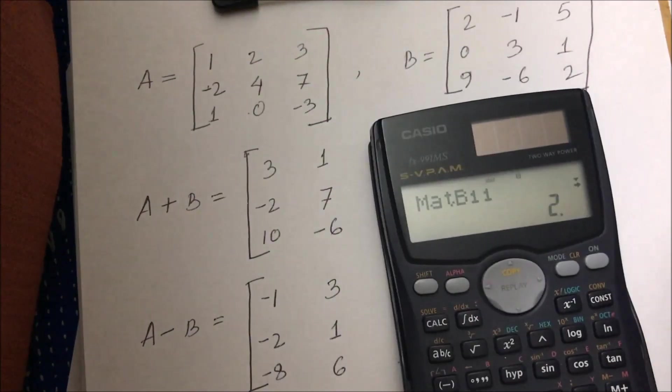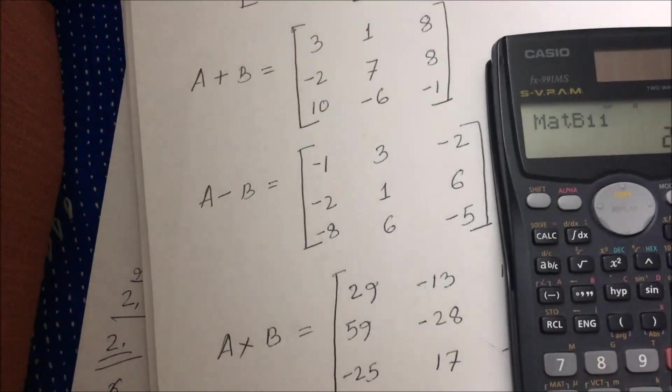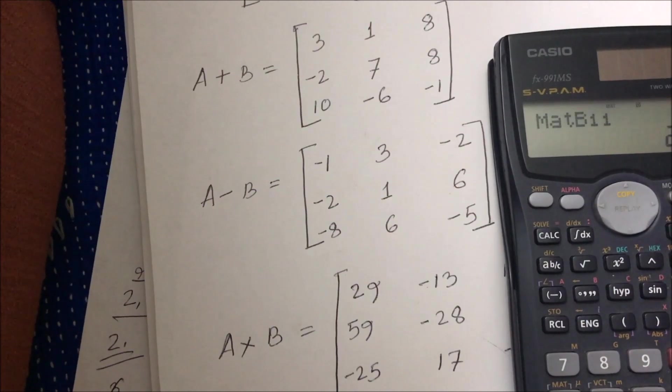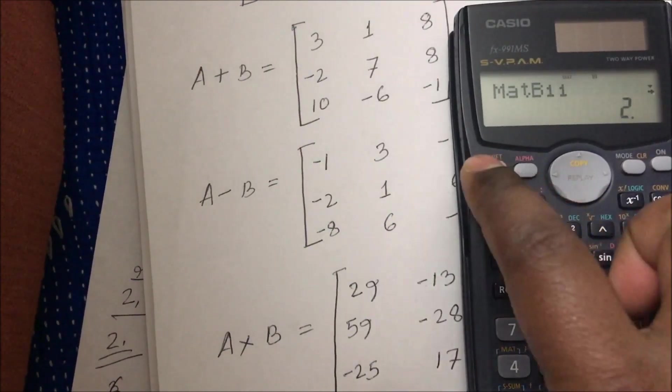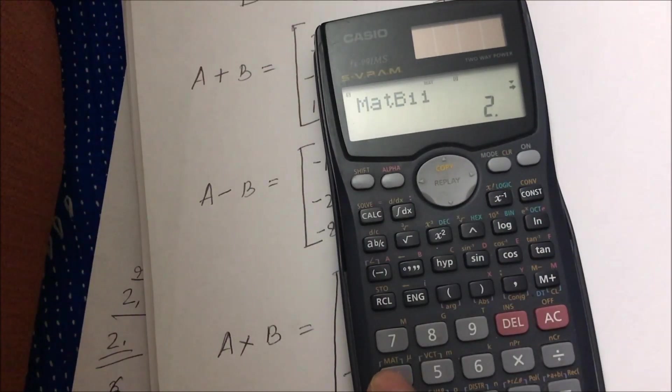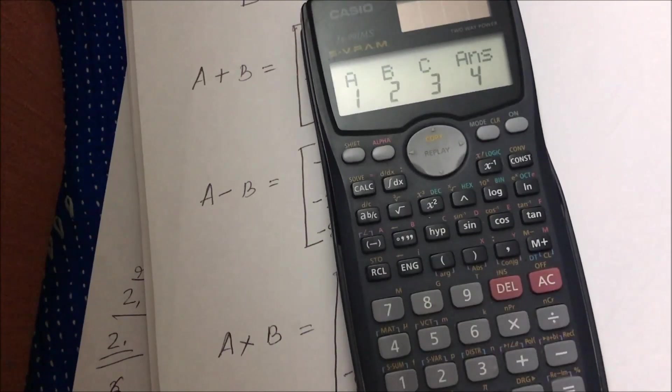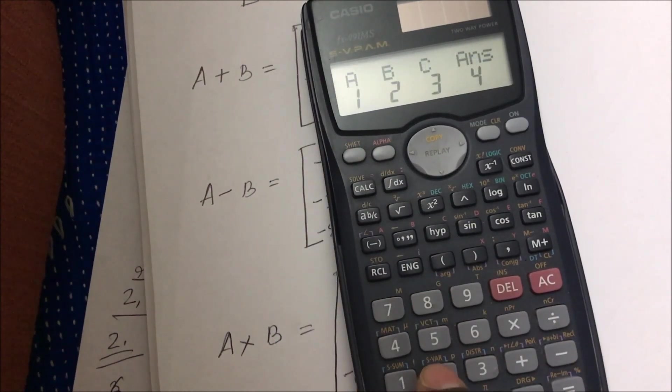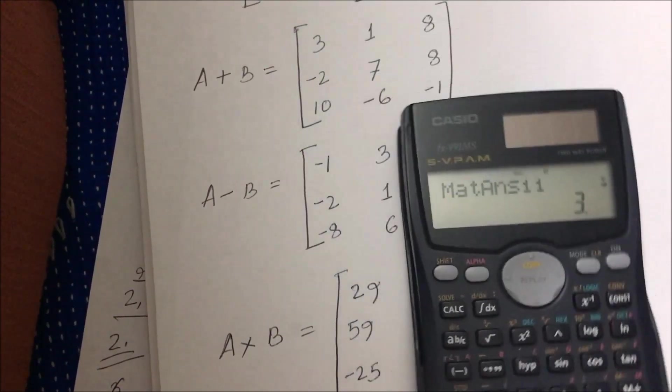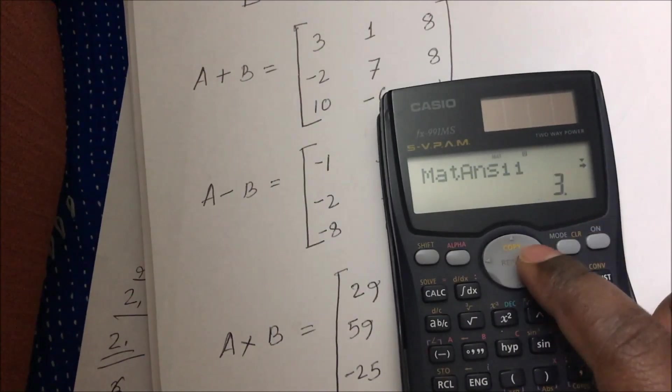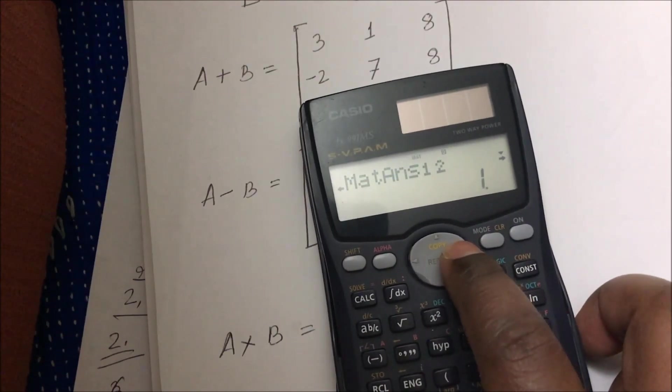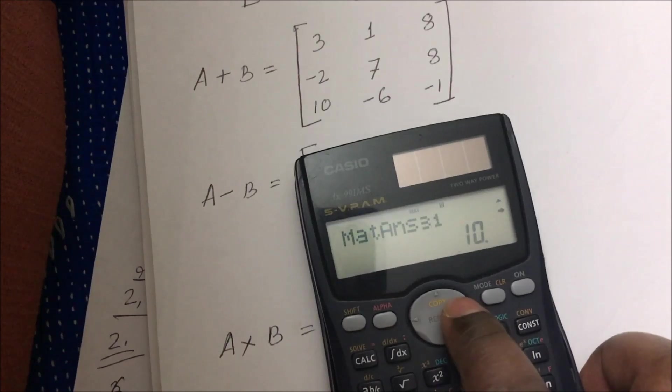Okay, so now I put the input of my matrices. Now I do not need to put these values again. I can use the same values for addition, subtraction, and multiplication. Let's do first the addition. Put shift again. In every matrix operation you have to go to this matrix button. Now I have to go to number 3 matrix, not dimension, not edit, just 3: A matrix, plus, shift, matrix again, 3, B matrix. Boom, done! My addition is done. Now it's giving me the value again row-wise: first row 3, 1, 8, -2, 7, 8, 10, -6, 1. Good.